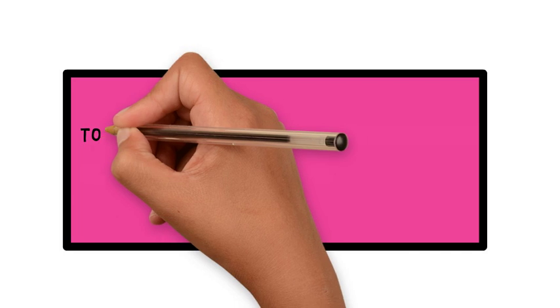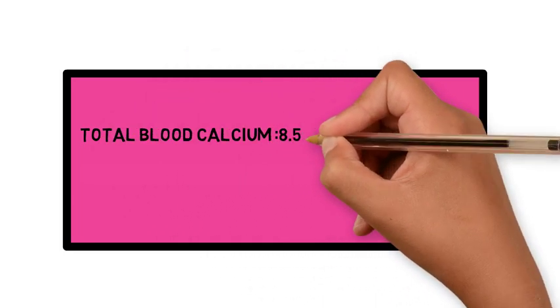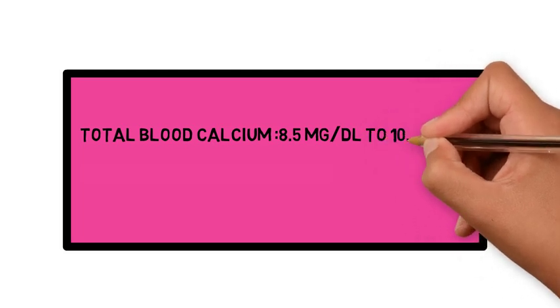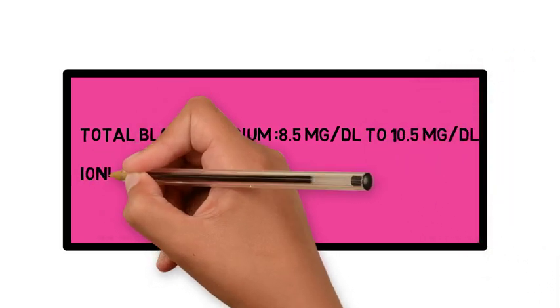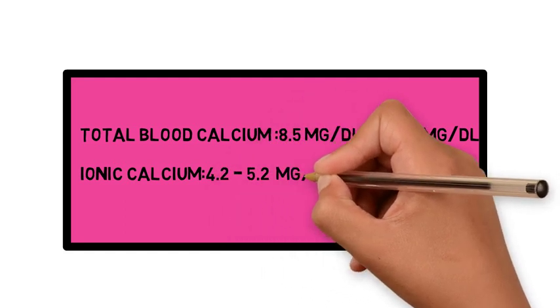A few numbers to remember: total blood calcium is about 8.5 mg/dL to 10.5 mg/dL. Ionic calcium is 50% of that, which is about 4.2 to 5.2 mg/dL.